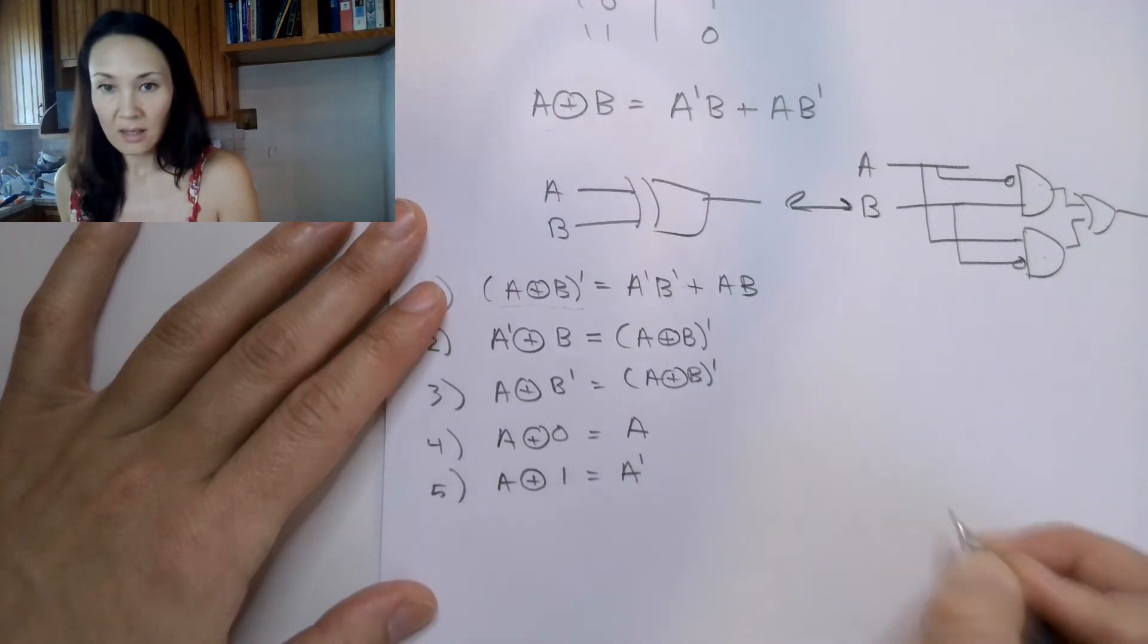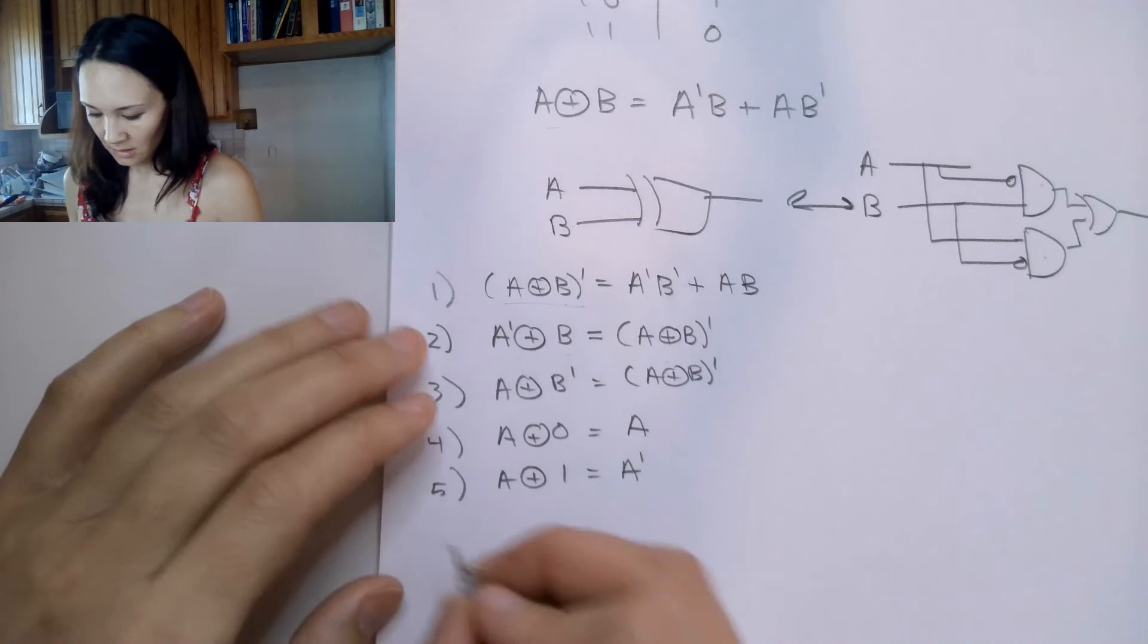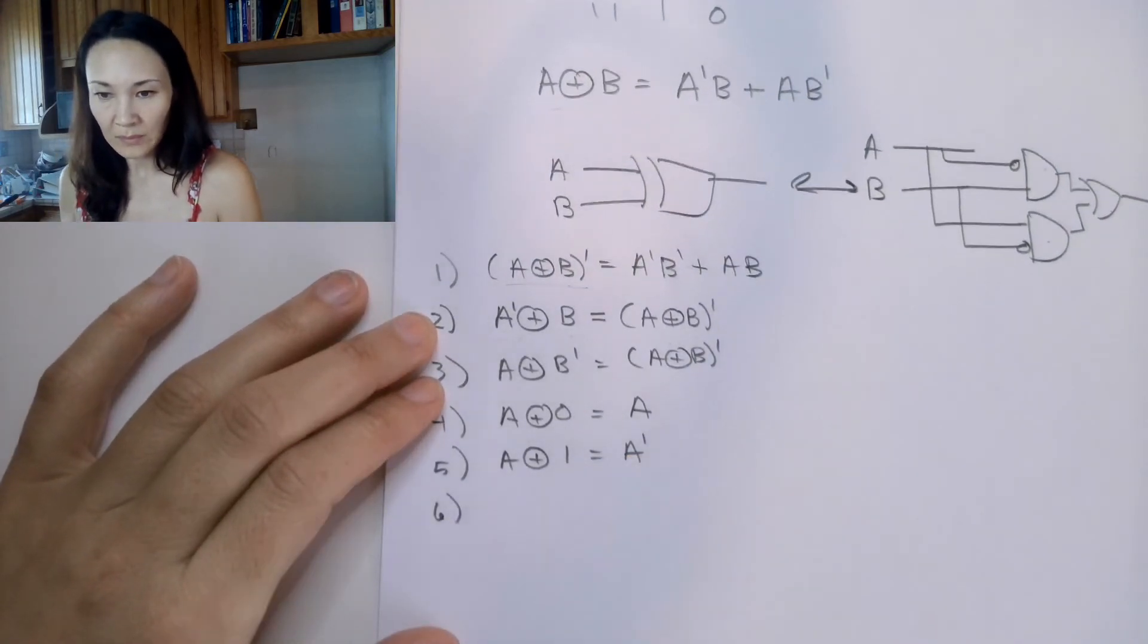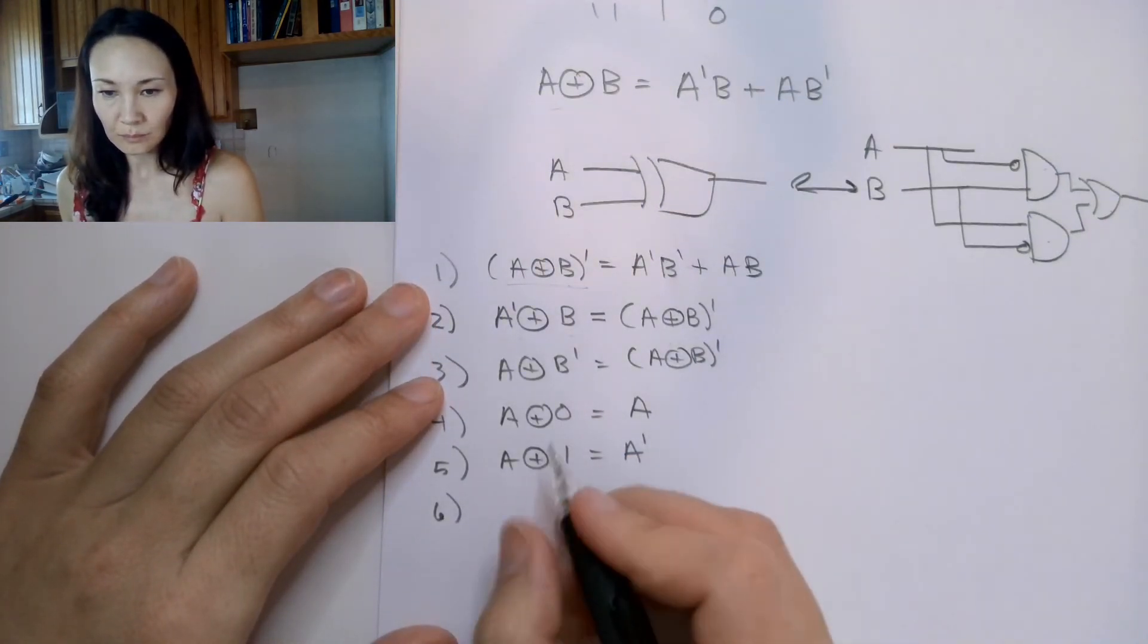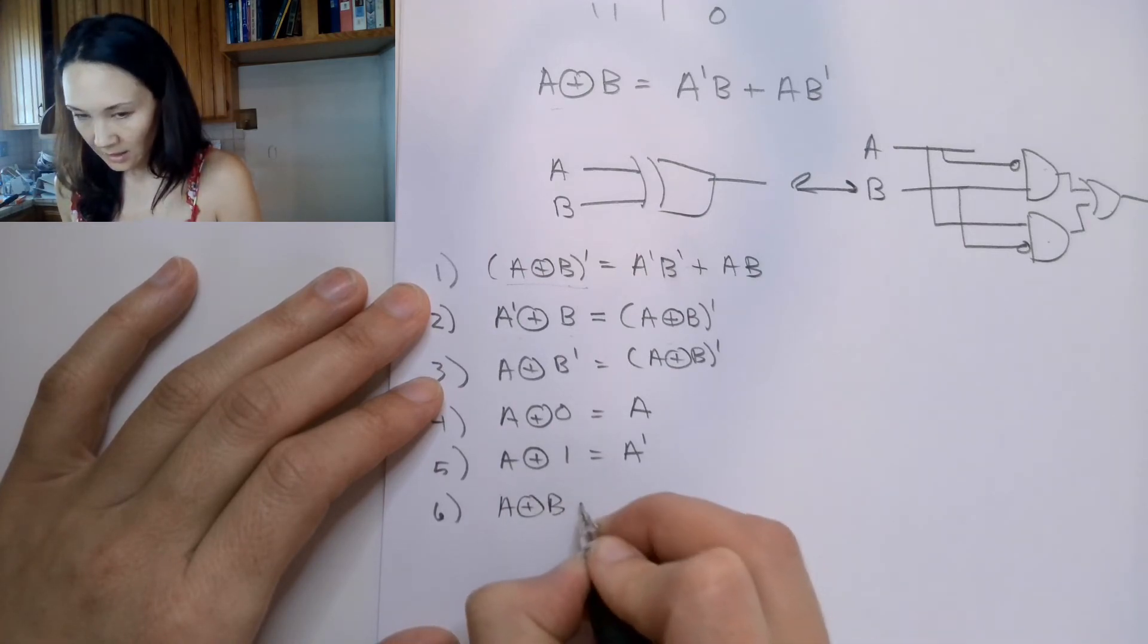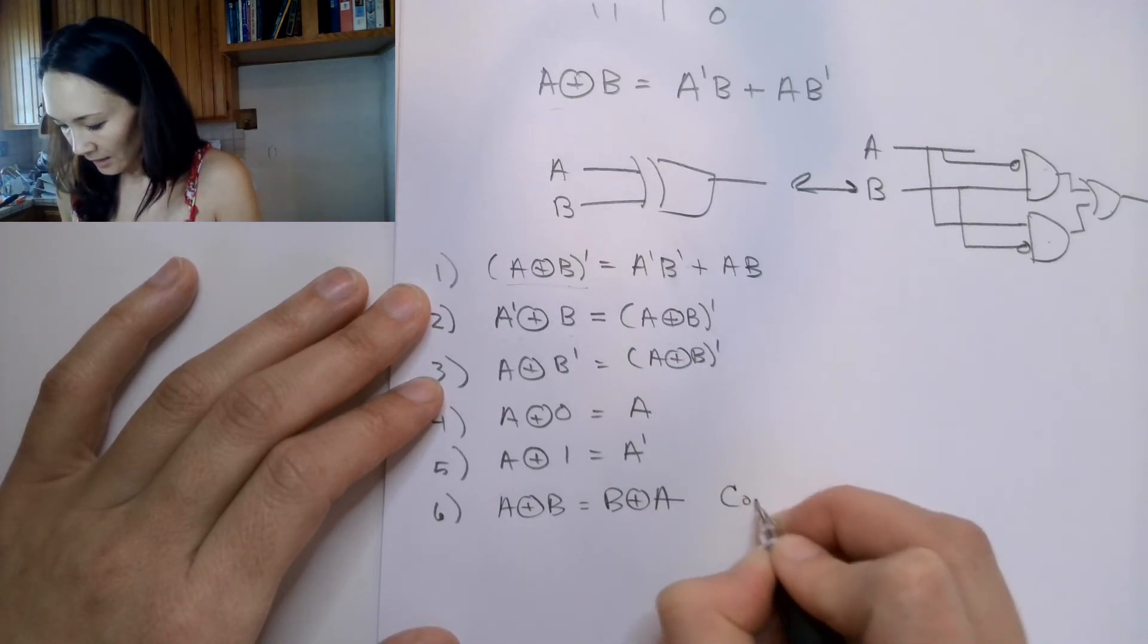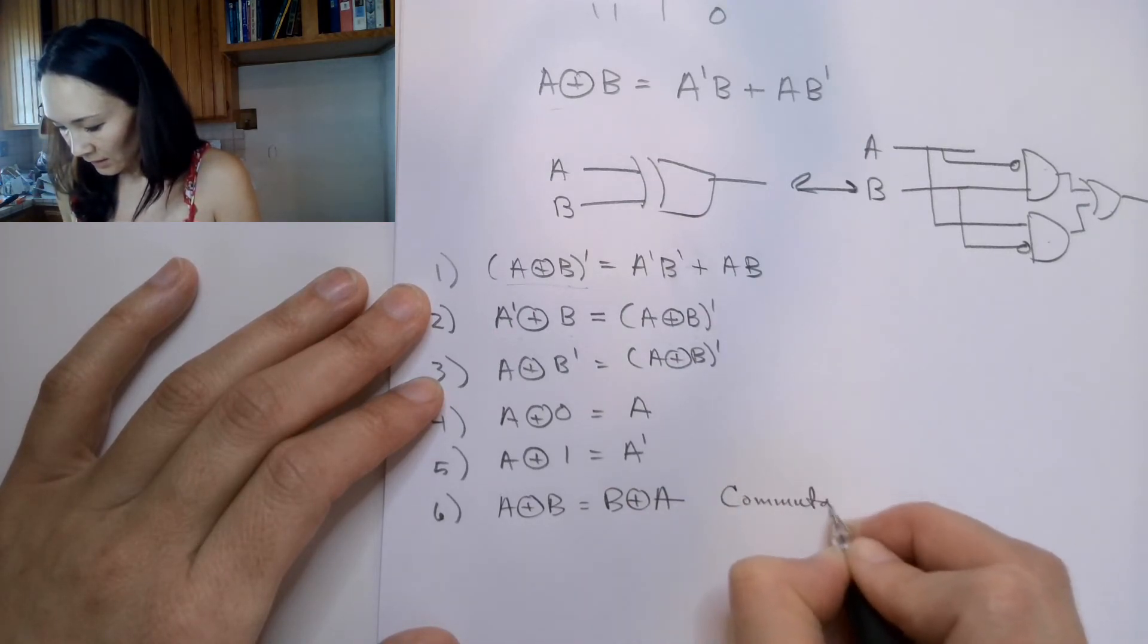And then we also have that A XOR B is equal to B XOR A. You might recognize this as commutativity.